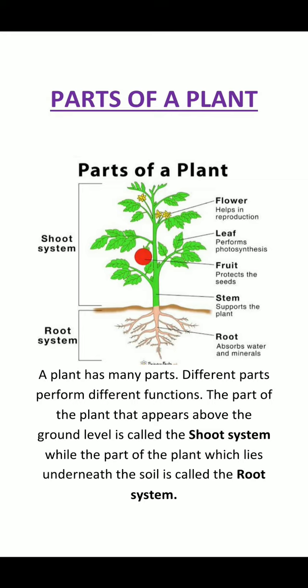Next are the leaves. The leaves are also called the kitchen of the plant. They prepare food for the plant, and the process is called photosynthesis.